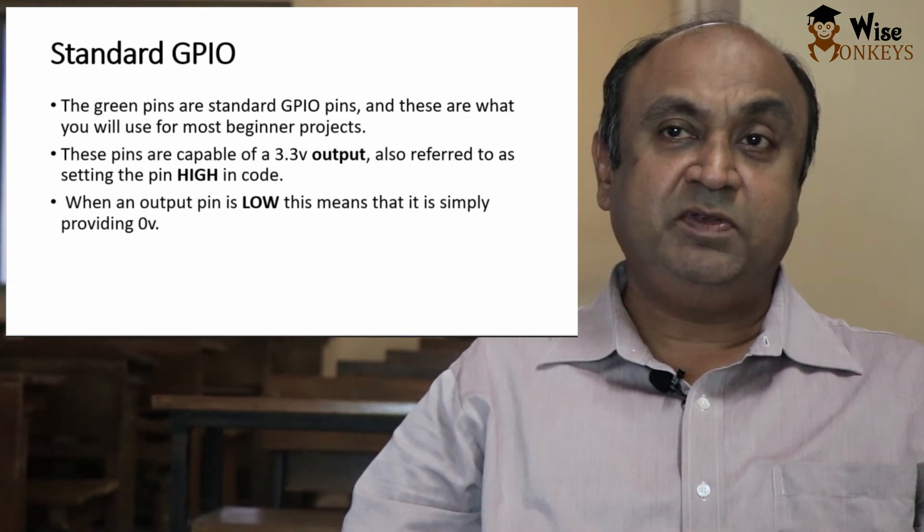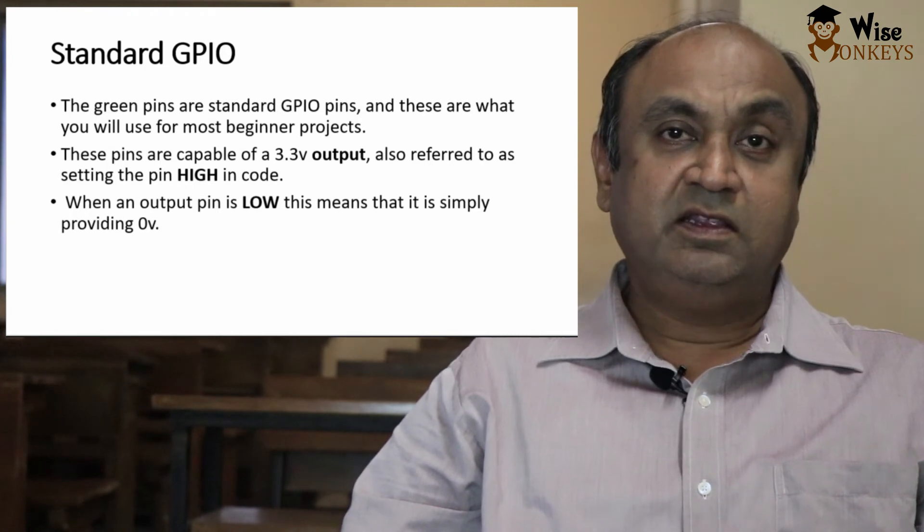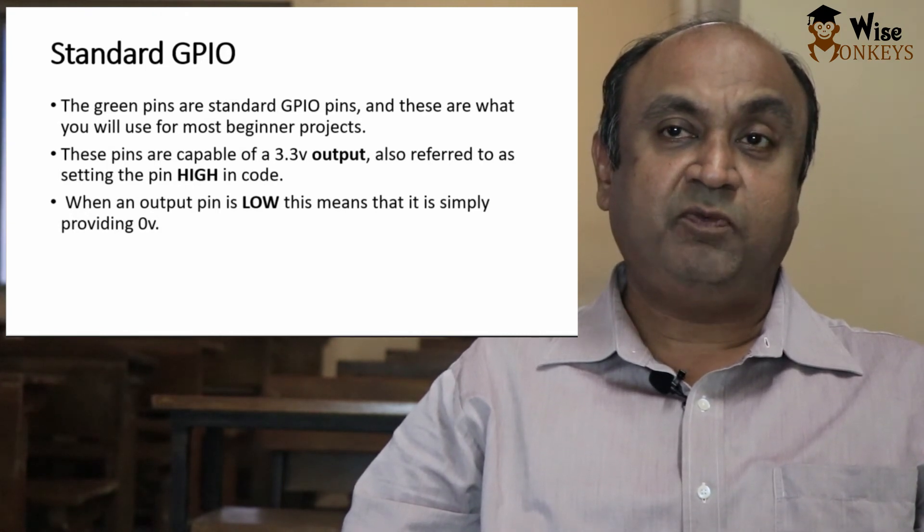The green pins are standard GPIO pins and these are what we use for most beginner projects. These are capable of 3.3 volt output also referred to as setting the pin high in code. When the output pin is low, this means that it is simply providing 0 volt.